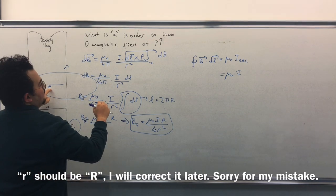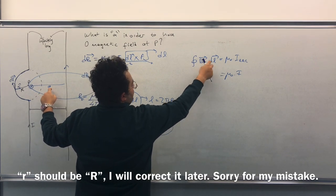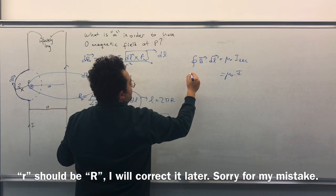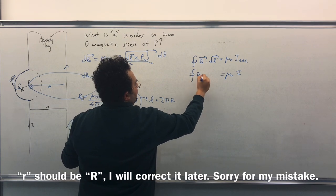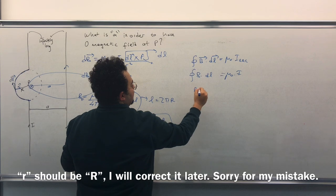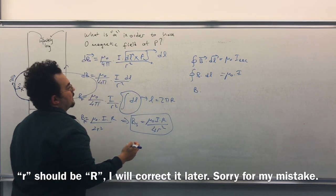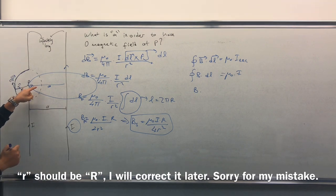And again we know that these are parallel to each other, so the vectors will disappear. B times dL, and this goes out. B times integral dL will be L, and L will be 2 pi A.